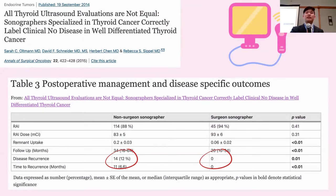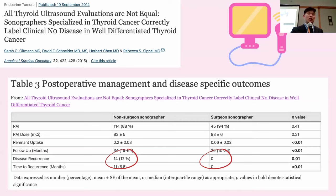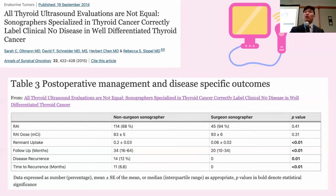Another paper from Dr. Sippel out of Wisconsin shows that in patients who had lateral neck disease, outcomes depended on who was doing the ultrasound. When surgeons do it themselves before the operation, they may be more focused and comprehensive. After treatment, 12% of patients who had a non-surgeon ultrasonographer had disease recurrence in the follow-up period, compared to none of the patients who had a surgeon-sonographer. Surgeons were able to detect all cases where lymph nodes were involved in the lateral neck and treat them accordingly.